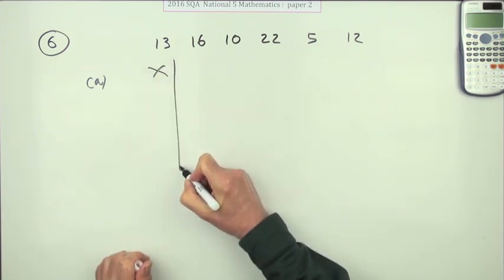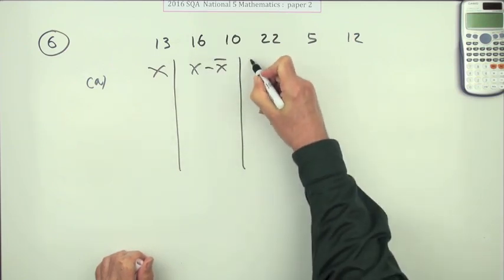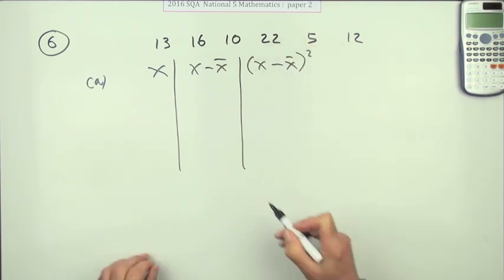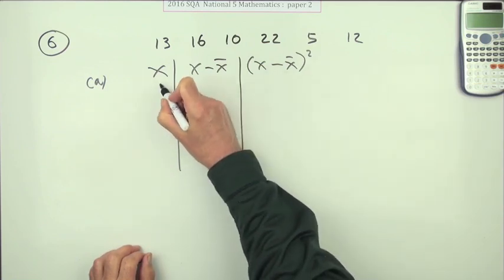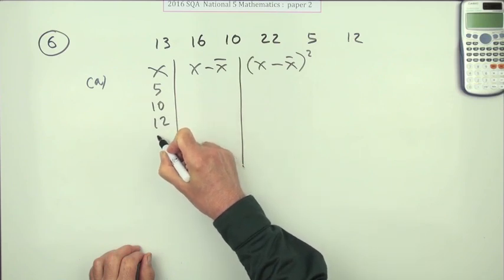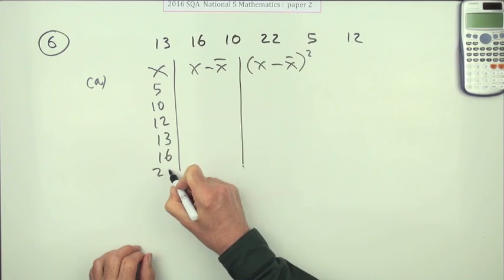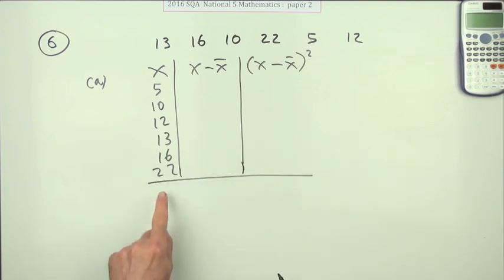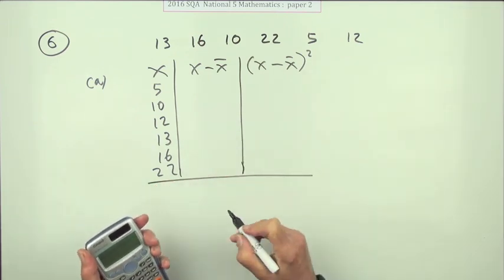Put those numbers down in any order you like. I prefer numerical order, so I'm going to put the five, then the ten, then the twelve, then the thirteen, then the sixteen, and then the twenty-two. So first part is add these numbers up, and it comes to 78.